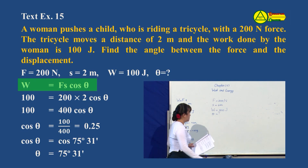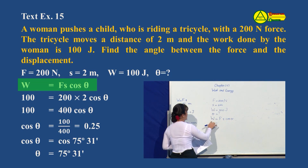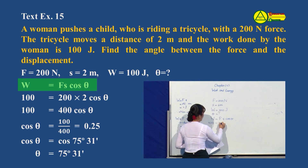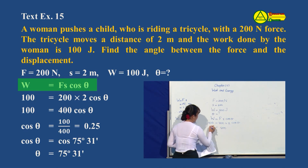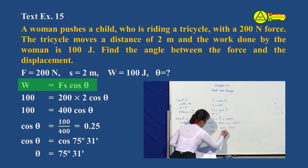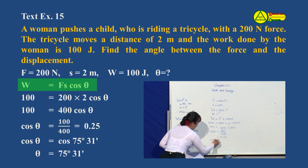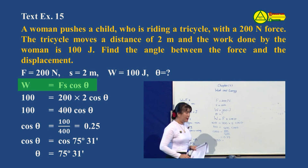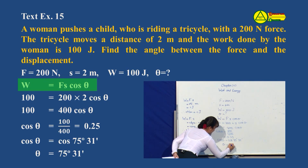That will be equal to W = Fs cos θ. Okay, three options. We call W equal to 100. F is 200. X is 2. cos θ. Okay, that gives us 200 times 2 equals 400. So cos θ equals 100 divided by 400, which gives 0.25. So θ is approximately 75.25 degrees.